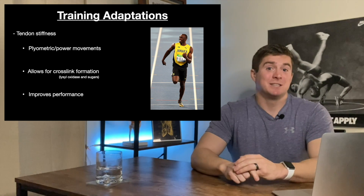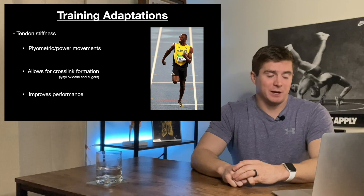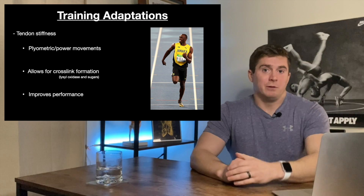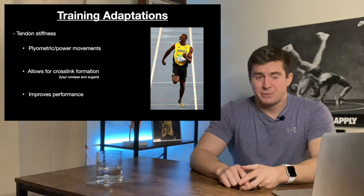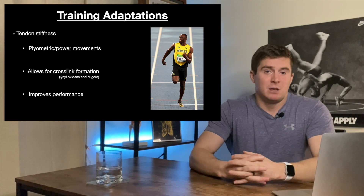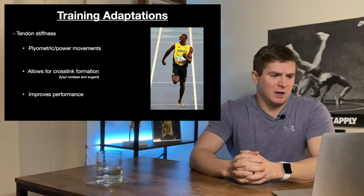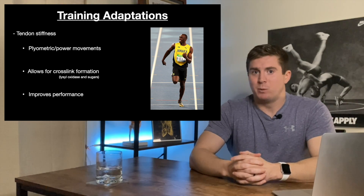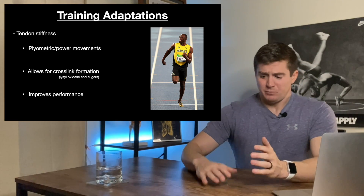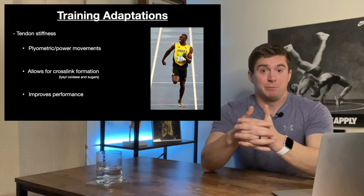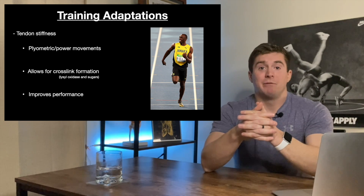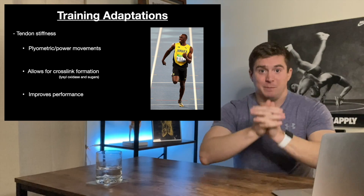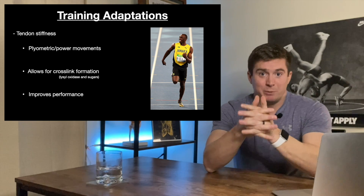If you want a stiffer tendon — which is better for performance — you're going to do more plyometric or power movements like jumping, clean and jerks, sprinting, things like that. You need look no further than track athletes; they're very fast, powerful, and explosive because their tendons are very stiff. This is because the way they move allows for cross-link formation — chemicals like lysyl oxidase and sugars are actually doing the cross-linking. Remember the belly flop: that quick force distribution means the molecules don't have a chance to move because of the viscoelastic nature. Same thing with the tendon — if we put a lot of force through these collagen fibers, the cross-links form because the force doesn't allow them to move. So every time we sprint or jump, more cross-links form and the stiffer the tendon gets.